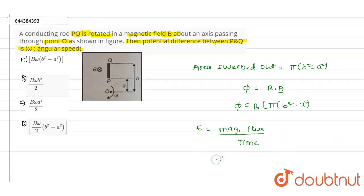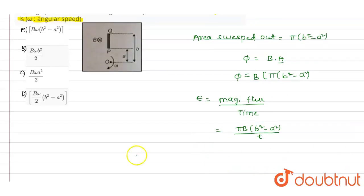According to that, we can write the magnetic flux value we have as pi into B of b squared minus a squared divided by time value t. Here angular velocity omega will be equals to two pi divided by t, so t equals two pi divided by omega.